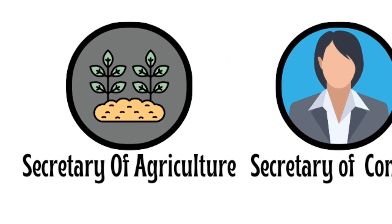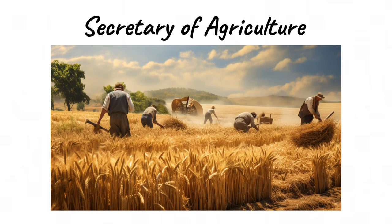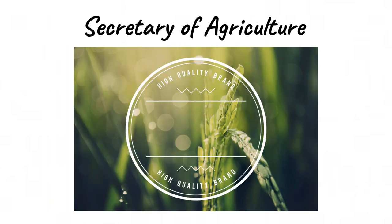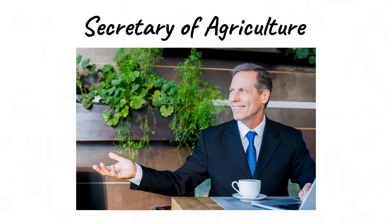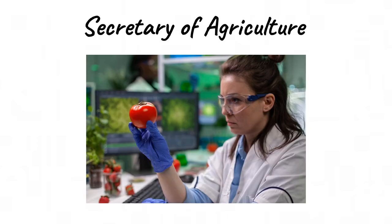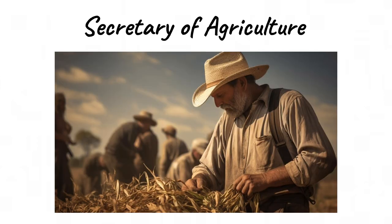Secretary of Agriculture. The Secretary of Agriculture is a Cabinet-level position in the United States government responsible for overseeing policies related to farming, agriculture, and rural development. Appointed by the President and confirmed by the Senate, the Secretary of Agriculture heads the Department of Agriculture, which is tasked with promoting agricultural production, ensuring food safety, conserving natural resources, and supporting rural communities.